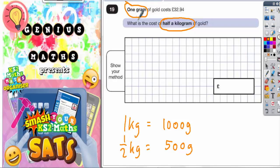So if one gram of gold costs £32.94, half a kilogram of gold is going to be 500 lots of this £32.94. So we're going to do 500 times £32.94.